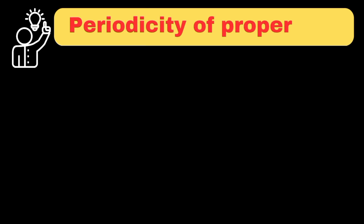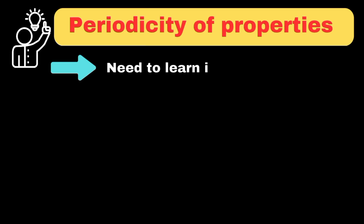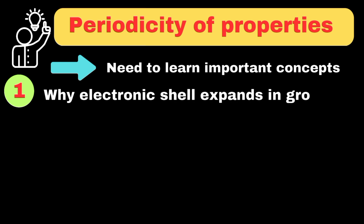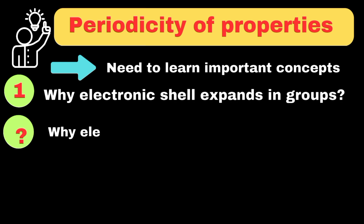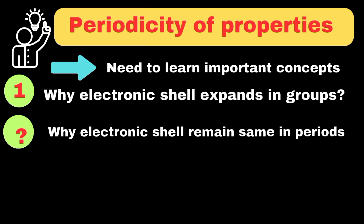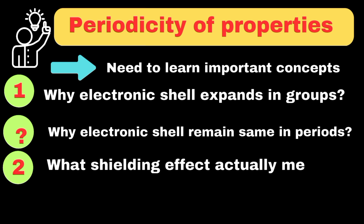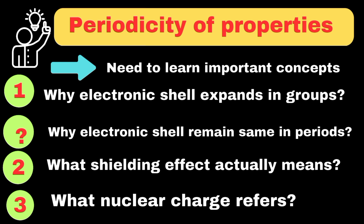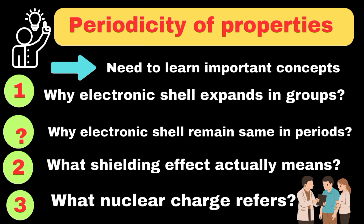To understand the periodicity of properties deeply, we must first learn some important concepts: why electronic shells expand or extra shells are added in groups, and why electronic shells remain the same or extra shells are not added in periods. Second, we must know what the shielding effect of inner electrons actually means, and when it increases or decreases. Last but not the least, we must understand what nuclear charge actually refers to. We will explain these important concepts so that later we can understand the periodicity of properties in a very simple and easy way.